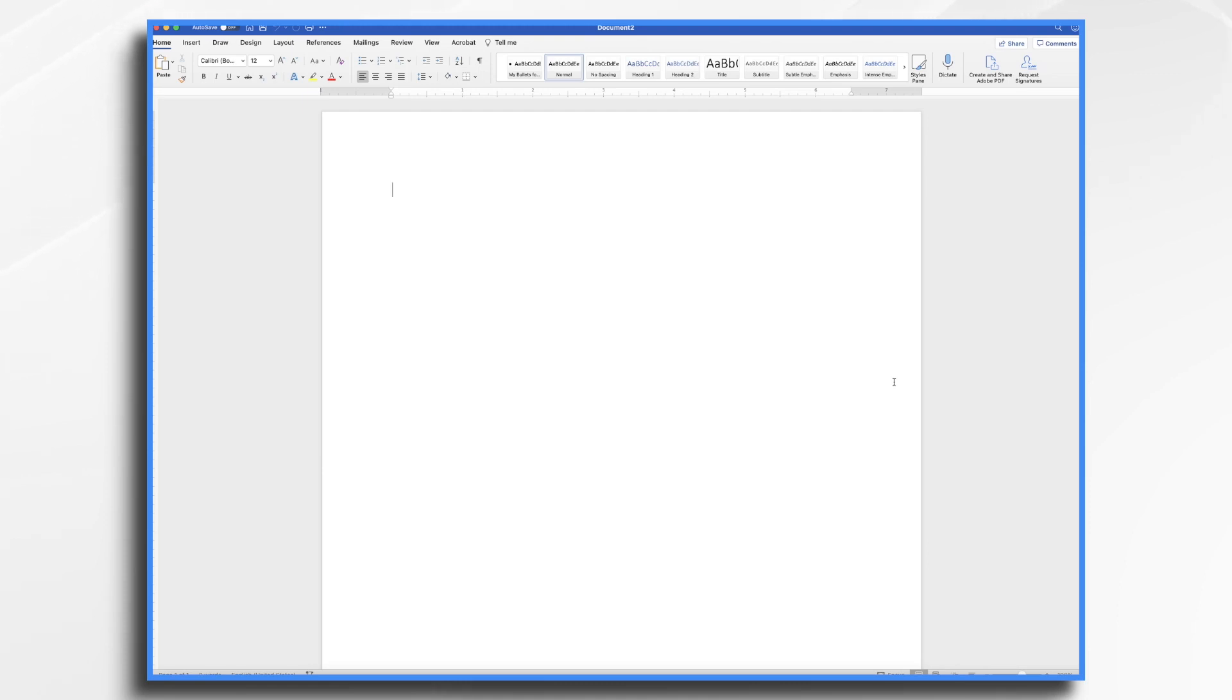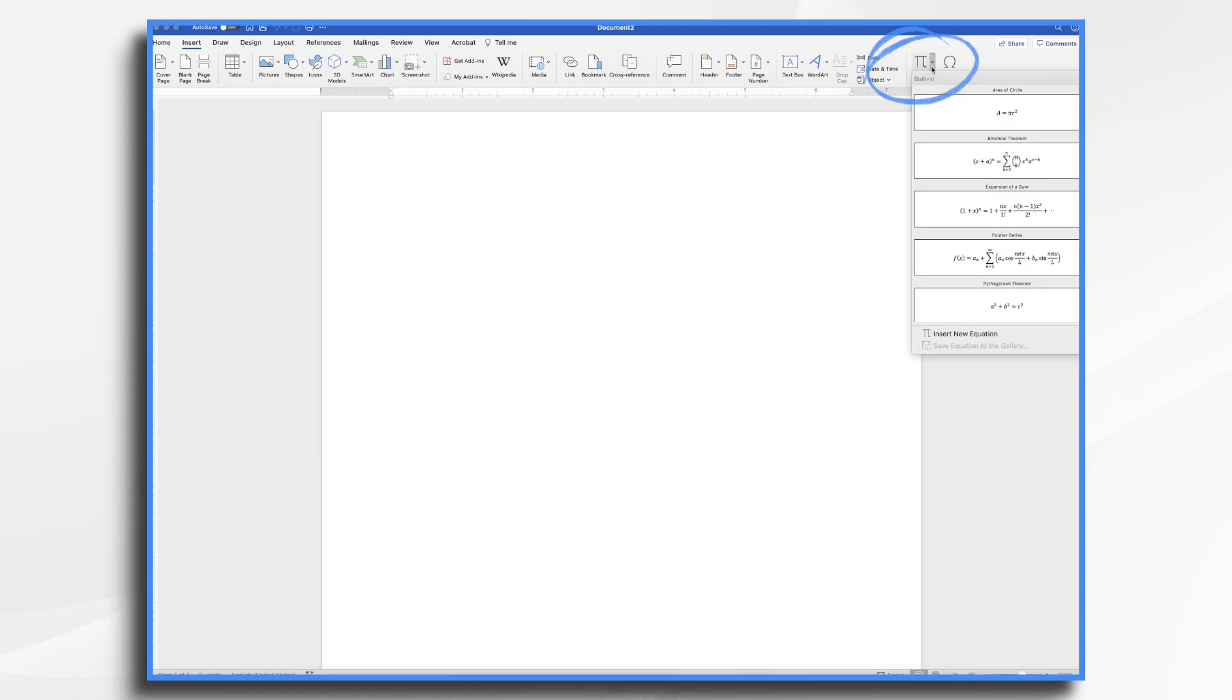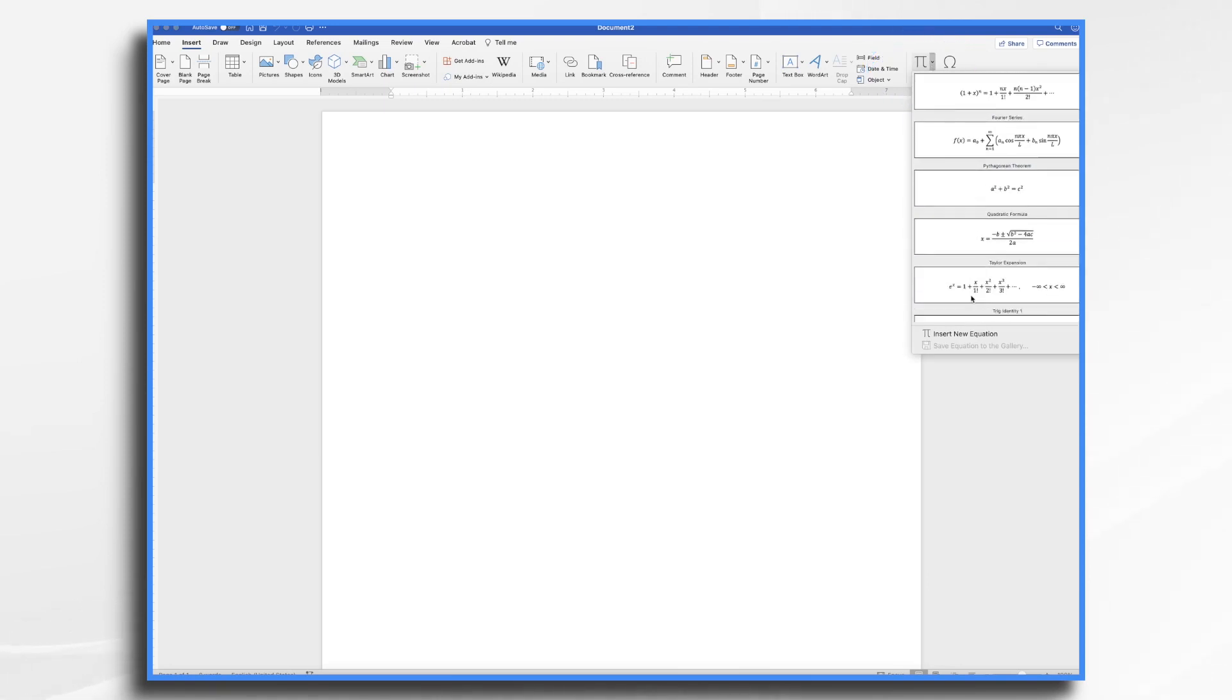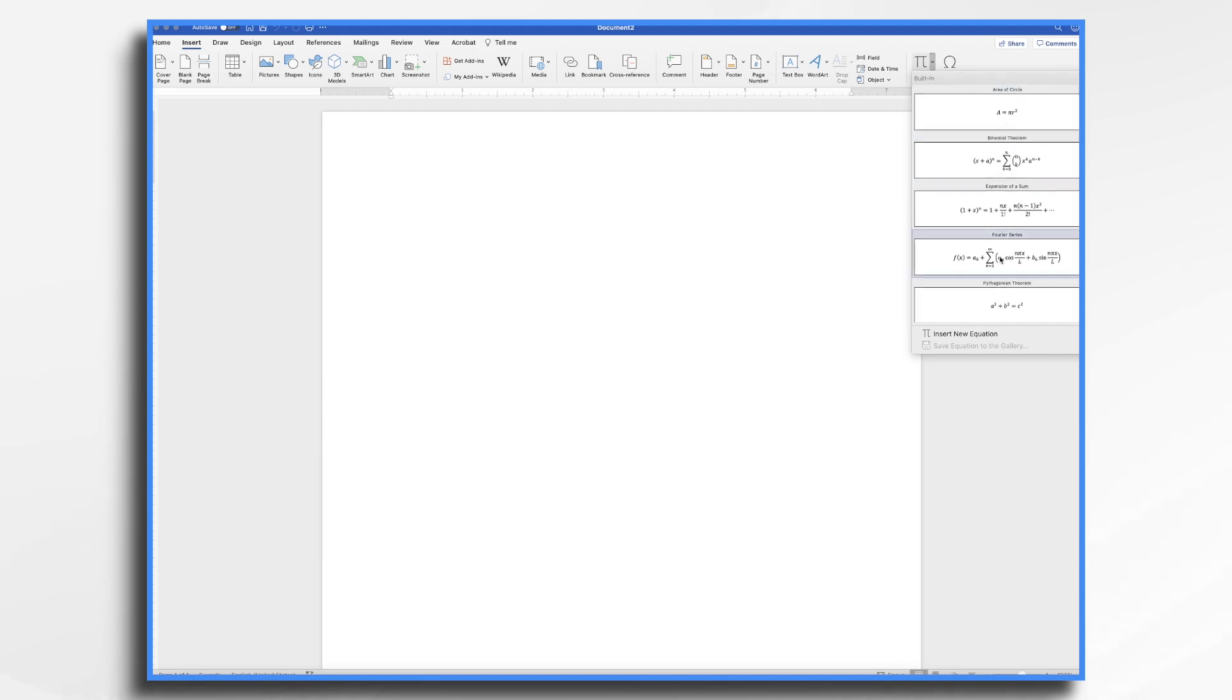So here I'm in Microsoft Word, and I want to create an equation. If you go over to Insert, and then go over to the far right, where you'll see the equation option. Click the down arrow, and you'll have several options here, depending on what you want to create.